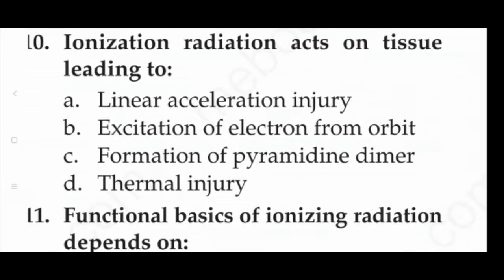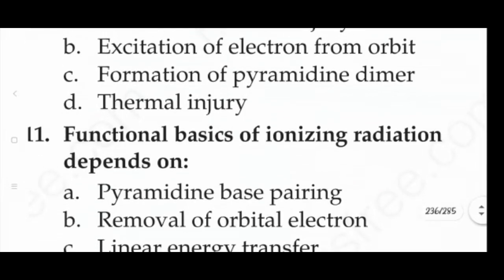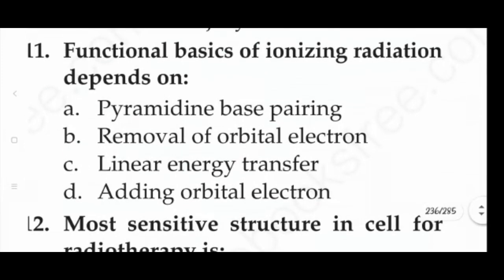Next question: ionizing radiation acts on tissue leading to — option A: linear acceleration injury, option B: excitation of electrons from orbit, option C: formation of pyrimidine dimer, option D: thermal injury. The answer is option B, that is excitation of electrons from orbit.